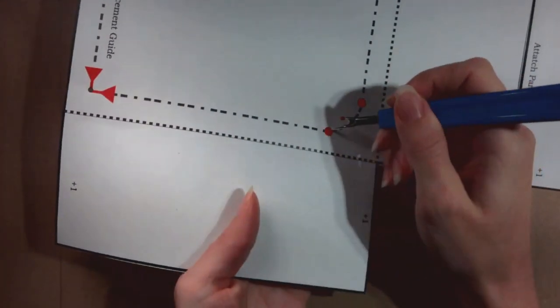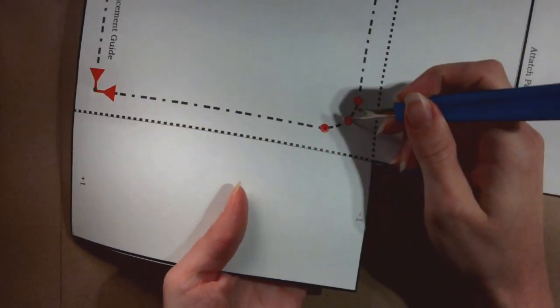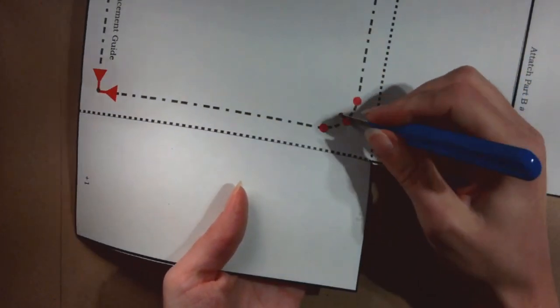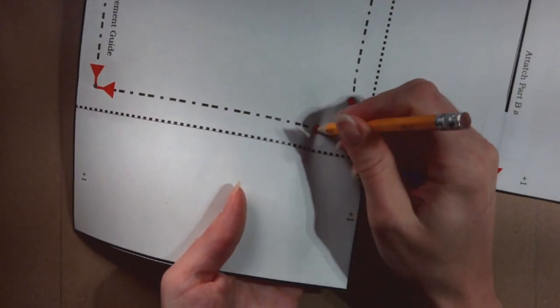If you prefer, the tip of the seam ripper can be used to start the hole, but the hole may need to be enlarged with the tip of the pencil afterwards. Be sure that the hole is just large enough to mark through with the pencil.